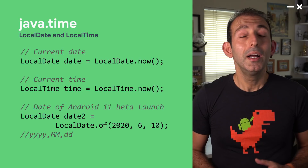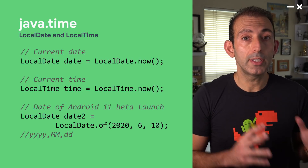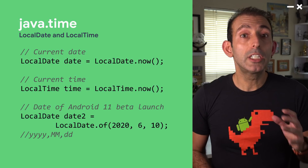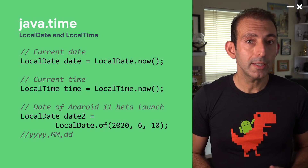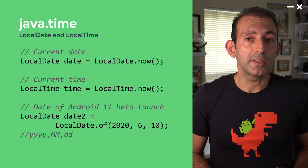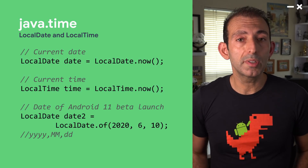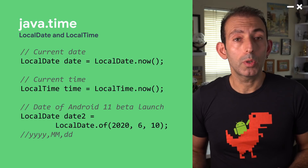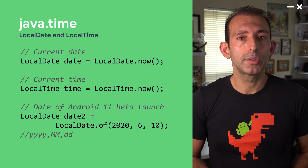Let's take a look at the new date and time classes. First, if you don't need time zone data on date and time objects, Java Time has two new classes: LocalDate and LocalTime. These two classes represent date and time relative to the user, such as an alarm clock or a timer, without worrying about time zones.